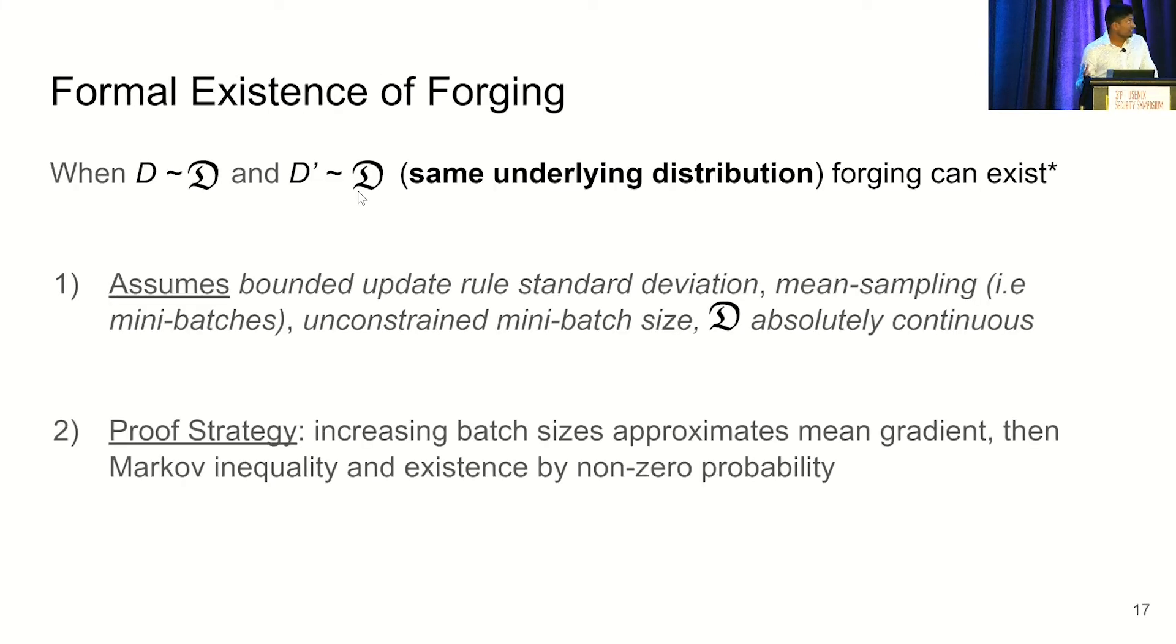But what we think about is a more probabilistic notion of forging, which is maybe our training data has some underlying distribution, and we can prove something with this assumption. What we prove is that if D is sampled from some underlying distribution and D prime is also sampled from that distribution, forging can exist. And this is under some mild assumptions. We'll assume that the update rule has well-defined mean and standard deviation, that the mini-batch size we're using is unconstrained, so we'll prove it for some large mini-batch, and that we're working over Rn, and our distribution is absolutely continuous, so it's kind of nice in a sense. And the proof strategy is really to just increase this batch size so that our updates are proxying the mean from the underlying distribution, then using some concentration inequality, and then hopefully we can prove by non-zero probability.